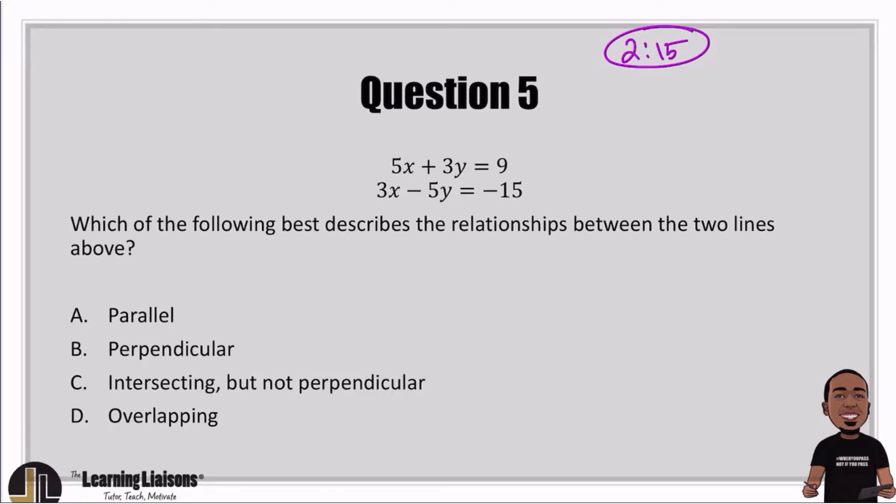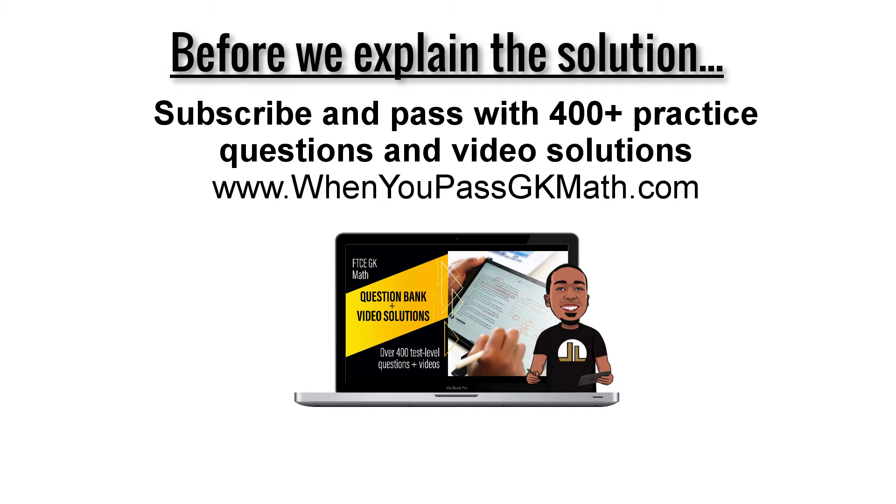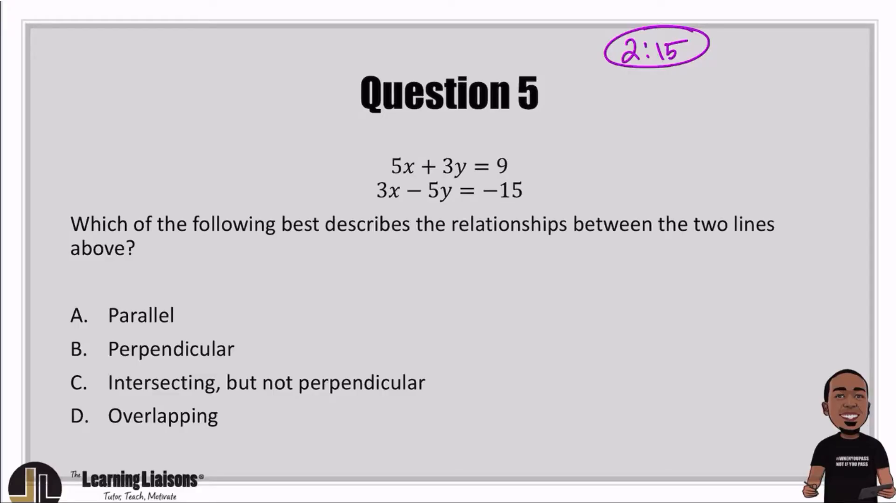So taking a look at the answer choices, we see parallel, perpendicular, intersecting but not perpendicular, and overlapping. Let me take a second to explain what the answer choices mean before we get to the work. Overlapping means that we have the same line.